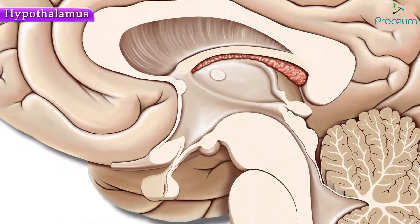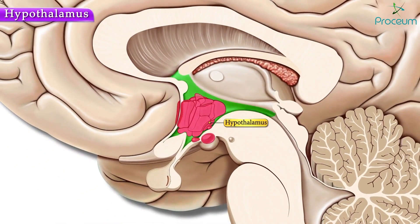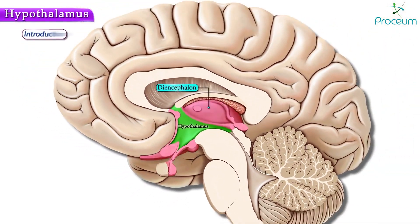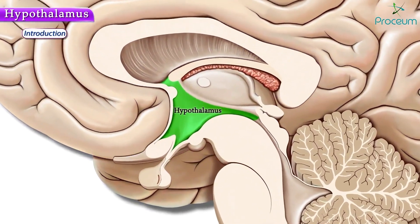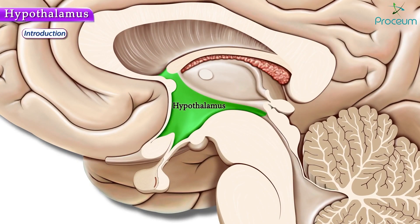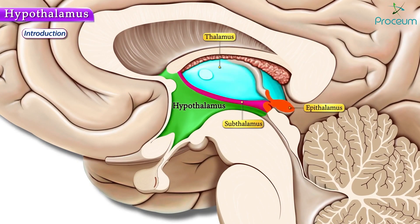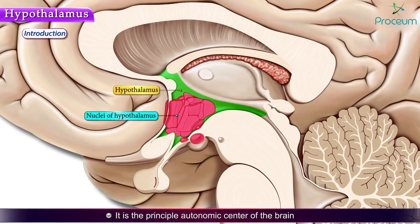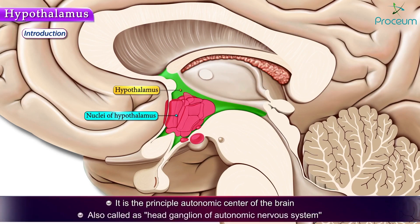In this video we'll be discussing the anatomy of the hypothalamus. The diencephalon makes up the caudal part of the forebrain, between the telencephalon and the midbrain. It consists of the hypothalamus, thalamus, epithalamus, and the subthalamus. It is the principal autonomic center of the brain and is also called the head ganglion of the autonomic nervous system.